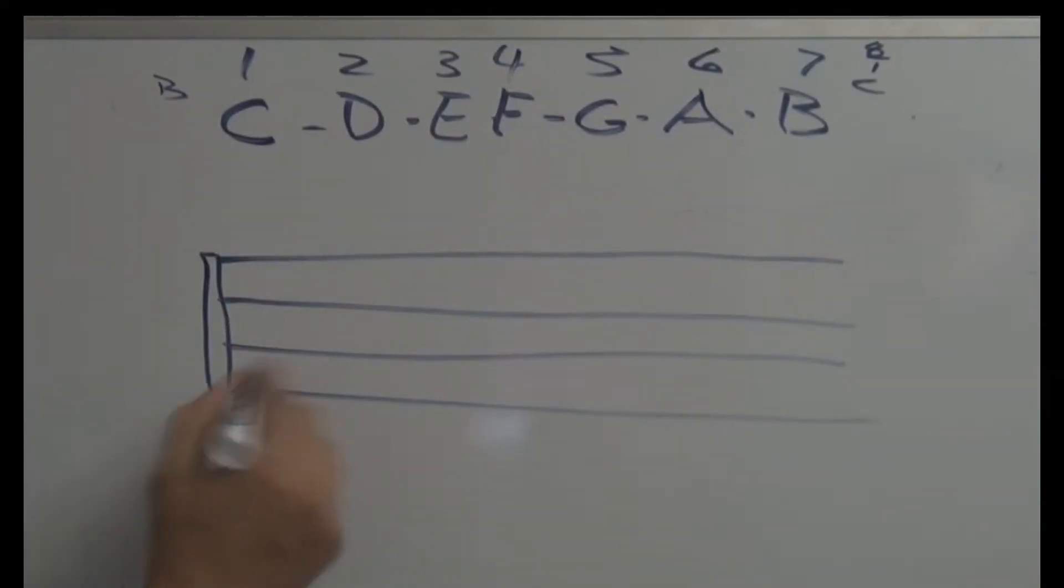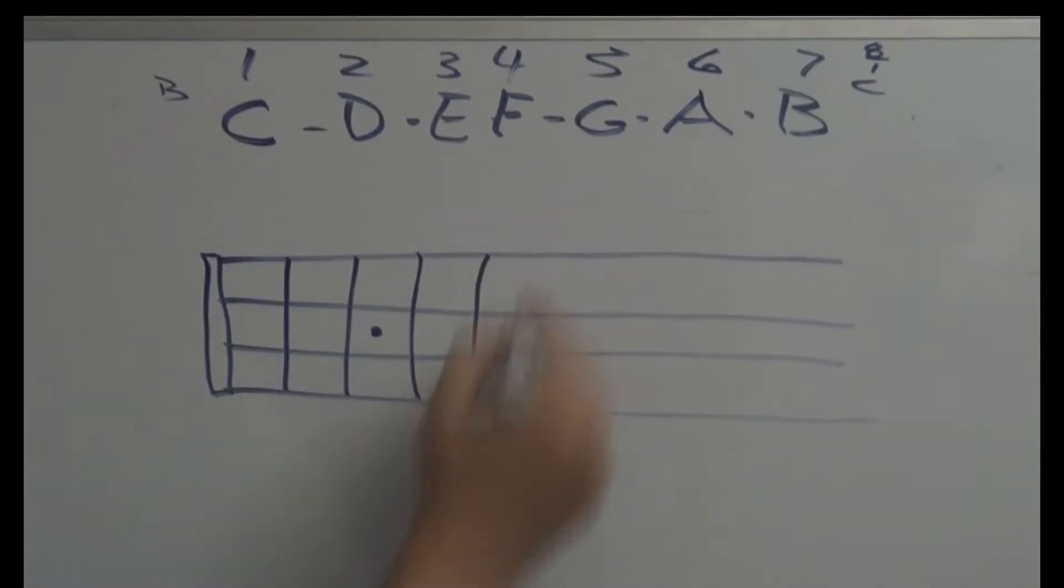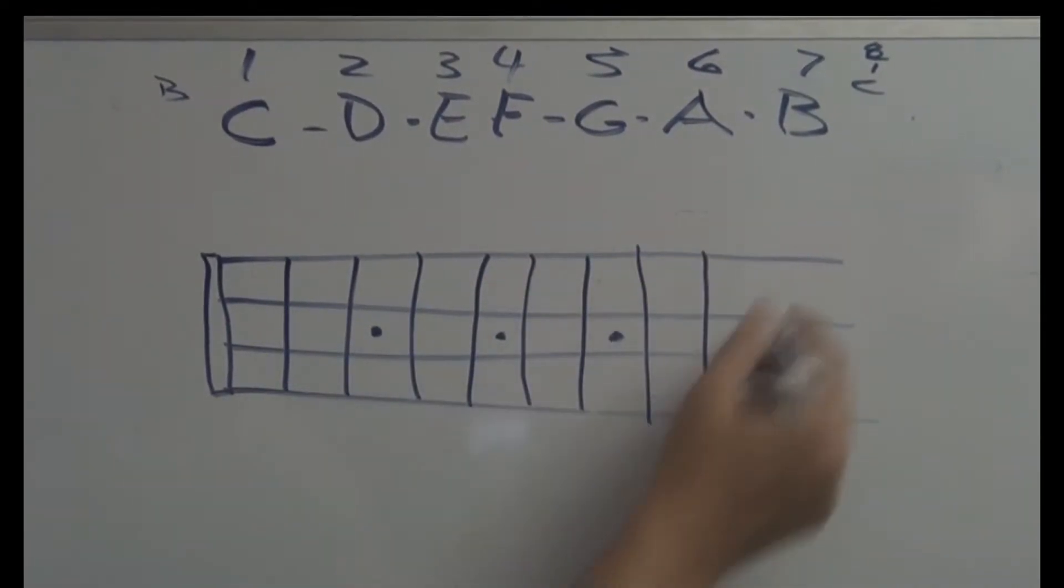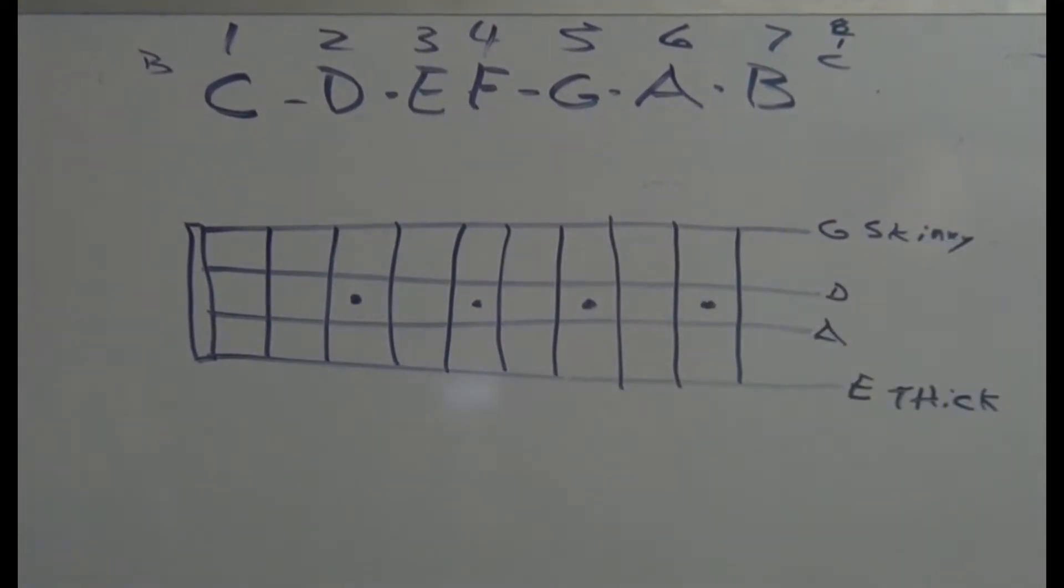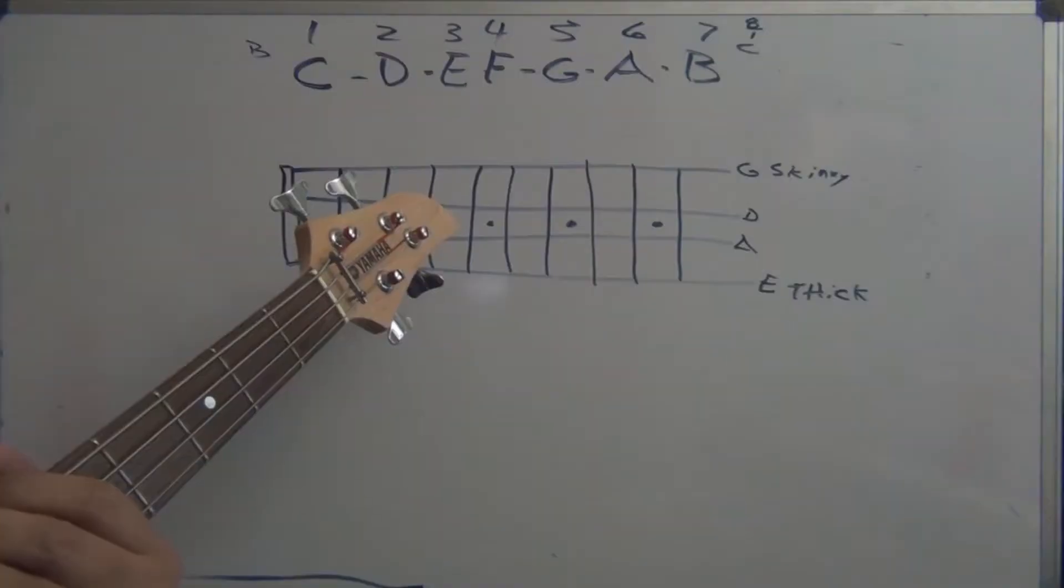One, two, three, four, five, six, seven, eight, nine... So this is the thick string - E, A, D, G. This is thick, remember the thick string. This is the skinny string. All right.